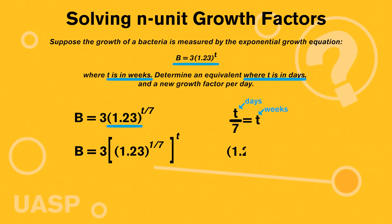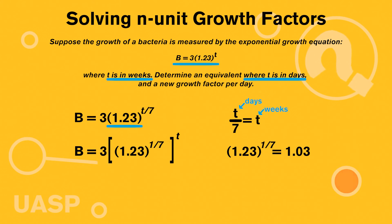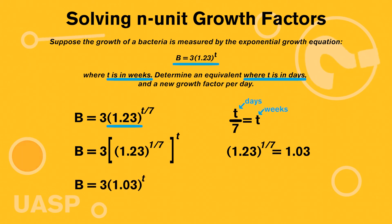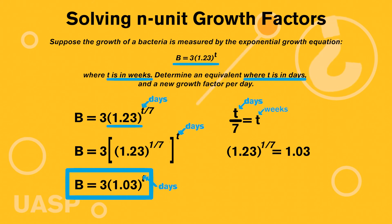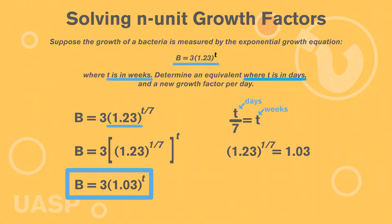If we solve 1.23 to the 1/7 power, we get an answer of 1.03. From here, we rewrite our equation as 3 times 1.03 to the power of t, and this is our new equation. This equation is equal to the original equation given, just with t now in days instead of weeks. Hopefully that helped — have a great rest of your day and good luck in your course.